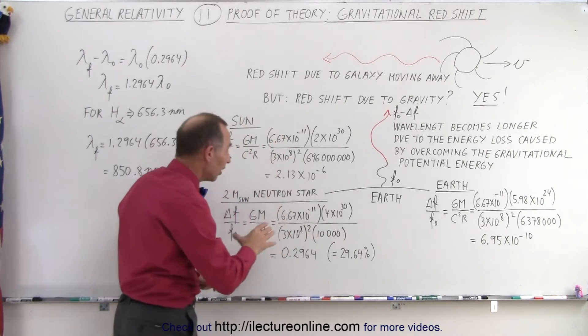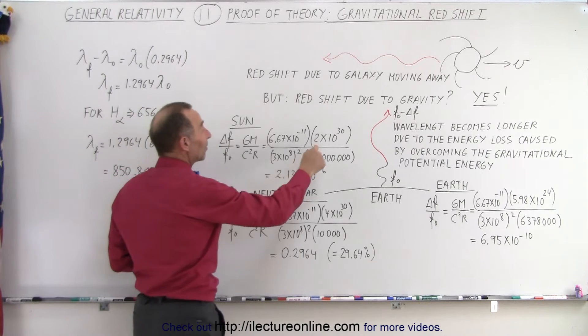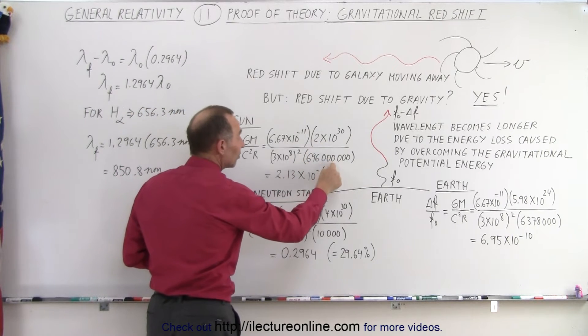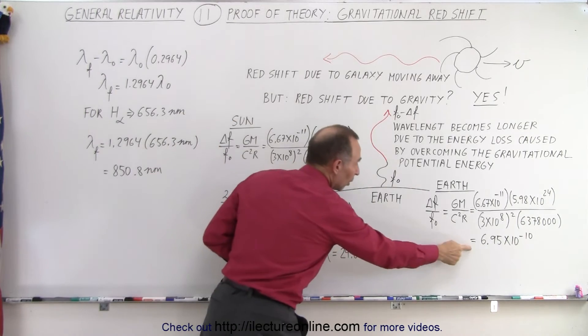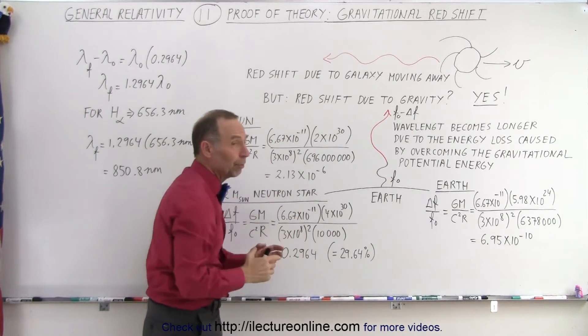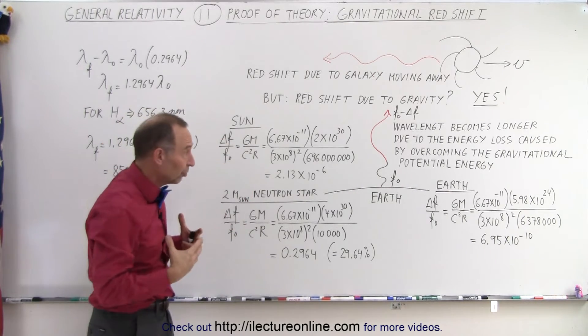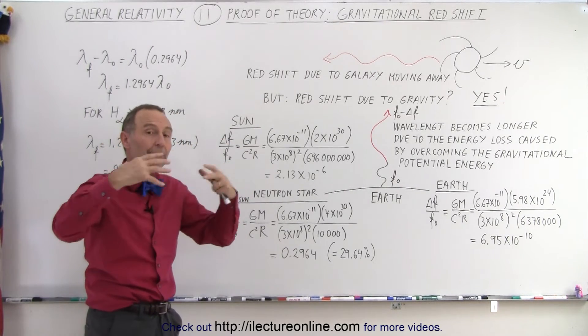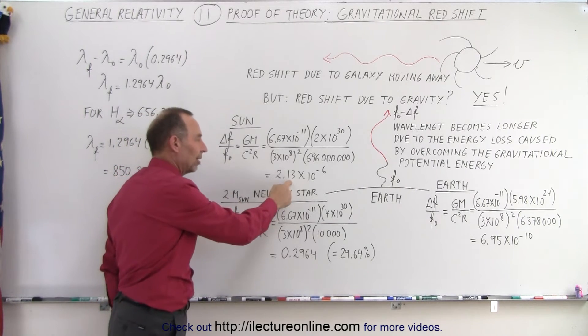If we go to the Sun, the Sun being a much larger object with much more mass, we plug in the mass of the Sun, we plug in the radius of the Sun, and now we get a number that is actually much bigger than it was before, but still a relatively small number. So yes, the light coming from the Sun is shifted because of gravitational forces, and the light having to overcome that potential gravitational well. But again, from a typical star like the Sun, it's not that big.